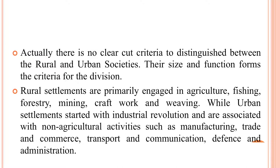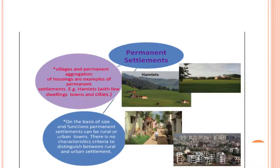Urban settlement started with the industrial revolution and is also associated with non-agricultural activities such as manufacturing, trade and commerce, transport and communication, defense and administration. Settlements can be permanent or temporary. Villages and permanent aggregation housing are examples of permanent settlement. Hamlet, few dwelling towns and cities are also forms of settlement.